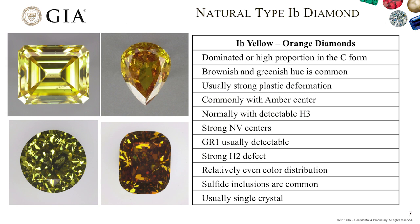Here I'll show you the major gemological features of a natural type 1b diamond. This diamond is dominated by a high proportion of C-form nitrogen. They show brownish and greenish hue in addition to some yellow color. They have strong plastic deformation, which generates a brownish color and also introduces a defect called a vacancy cluster. Over the long geological history, the vacancy cluster can release vacancies responsible for many optical centers: the amber center, H3, NV centers, GR1 (a vacancy), and also strong H2. These are very strong defects that affect the physical and gemological properties of this diamond.